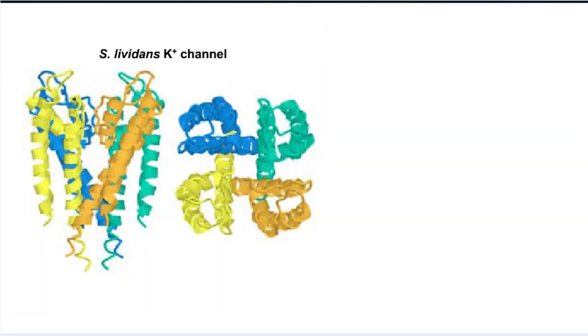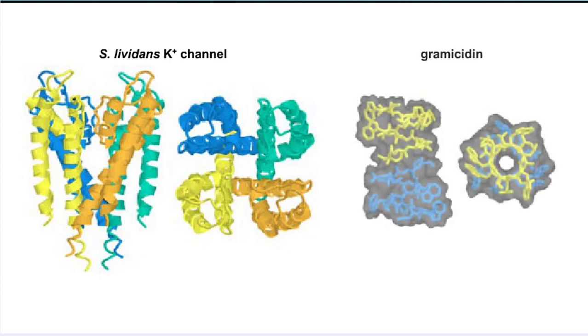Ion channels are more complex than porins, generally requiring more than one subunit to form a membrane passageway.